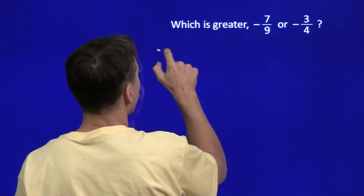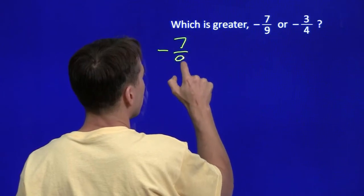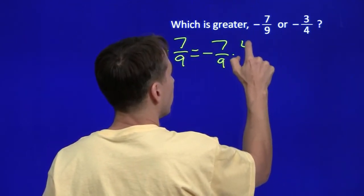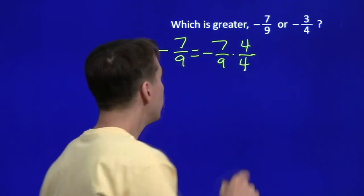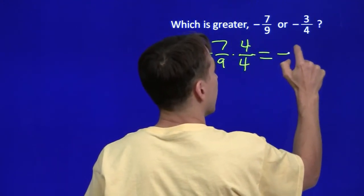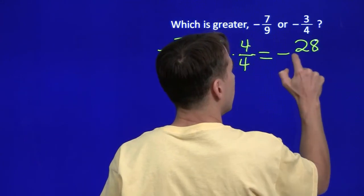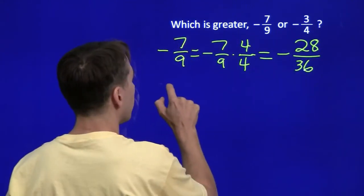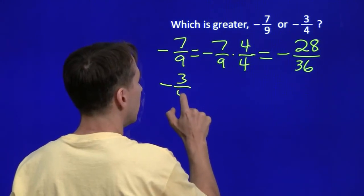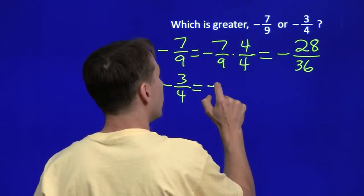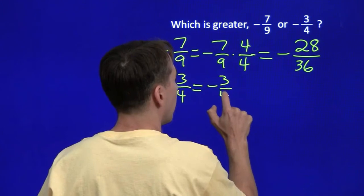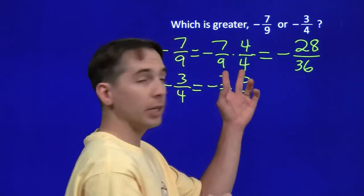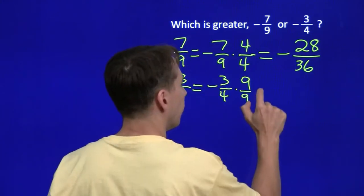We can take the first fraction, negative 7 ninths, and we multiply that by 4 over 4. Strategically multiplying by 1, and this will make negative 28 over 36. And we'll take negative 3 quarters, and we'll multiply that one by 9 over 9.